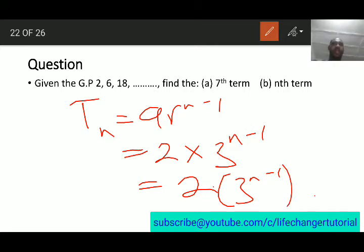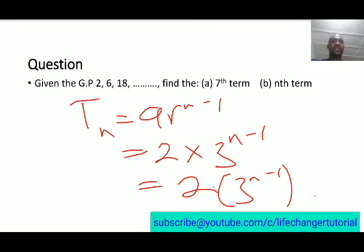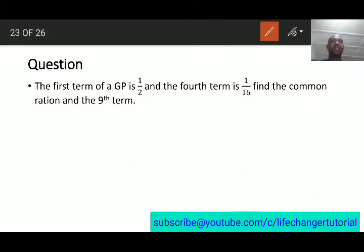We see another question here. We have that the 1st term of a GP is half and the 4th term is 1 over 16. Find the common ratio and the 9th term. First of all, we are given that the 1st term is half. And the 4th term, which is T4, is 1 over 16.